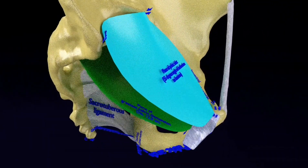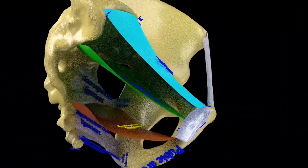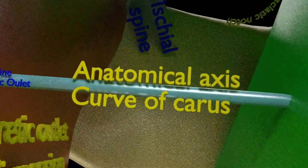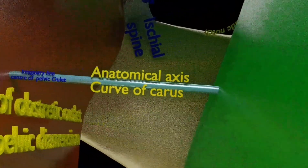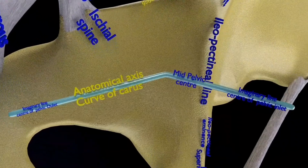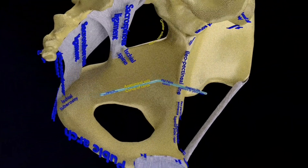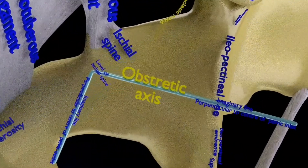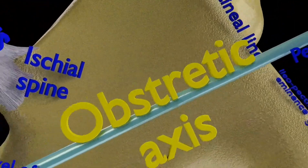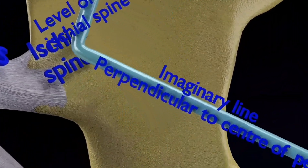The pelvic axis is divided into the anatomical axis and the obstetric axis. The anatomical axis, also called the curve of Carus, is an imaginary line joining the center points of the planes of the inlet, cavity, and outlet. It is C-shaped with concavity directed forwards and has no obstetric importance. The obstetric axis is an imaginary line representing the path traveled by the head during labor. It is J-shaped, passing downwards and backwards along the axis of the inlet until the ischial spines, then downwards and forwards along the axis of the pelvic outlet.